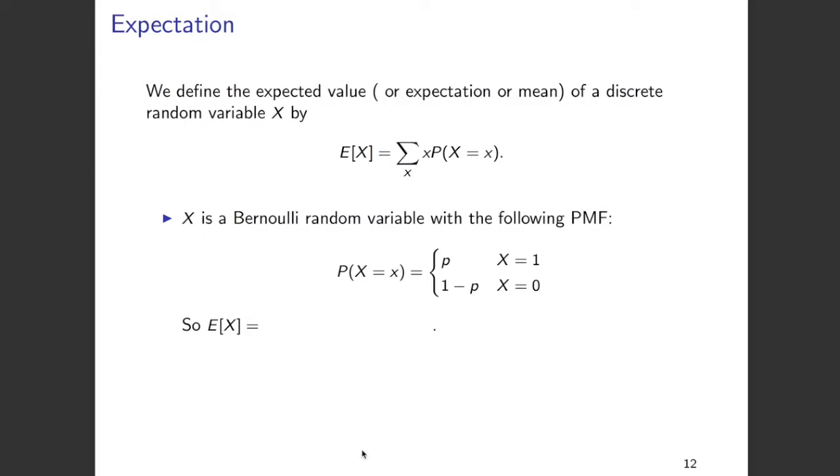As an example, let's consider that X is a Bernoulli random variable. The PMF or probability mass function of a Bernoulli random variable is given in the slide, where capital X can take two values: 1 and 0. It takes 1 with probability p and 0 with probability 1 minus p.